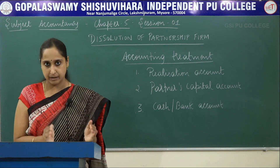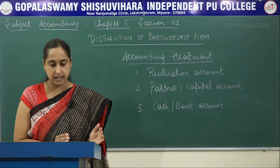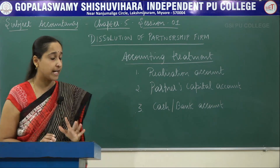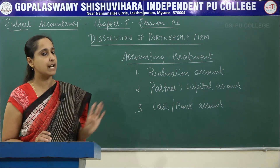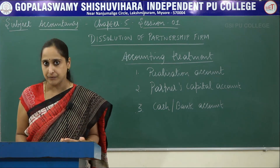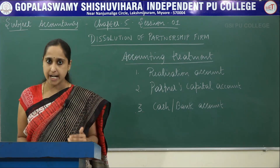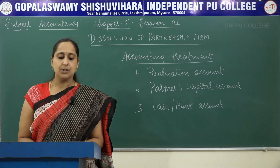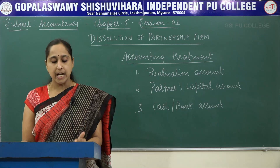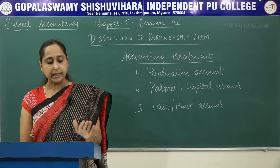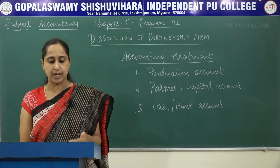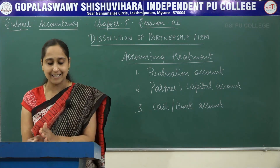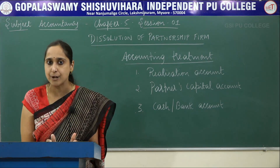All assets are realized and liabilities are paid. The profit or loss that we get is distributed in the Partners Profit Sharing Ratio. Now let us see the format of the Realization Account. On the debit side, we post realizable assets at book value — such as land and building, plant and machinery, furniture, vehicle, bills receivable, debtors, stock, and investments. These amounts are found in the assets side of the balance sheet and are posted to the debit side of the Realization Account. Next, to Cash or Bank — this is for payment of liabilities such as creditors, bills payable, bank loan, bank overdraft, interest, and outstanding expenses. These items are given in the adjustment of the problem and should be debited to the Realization Account.